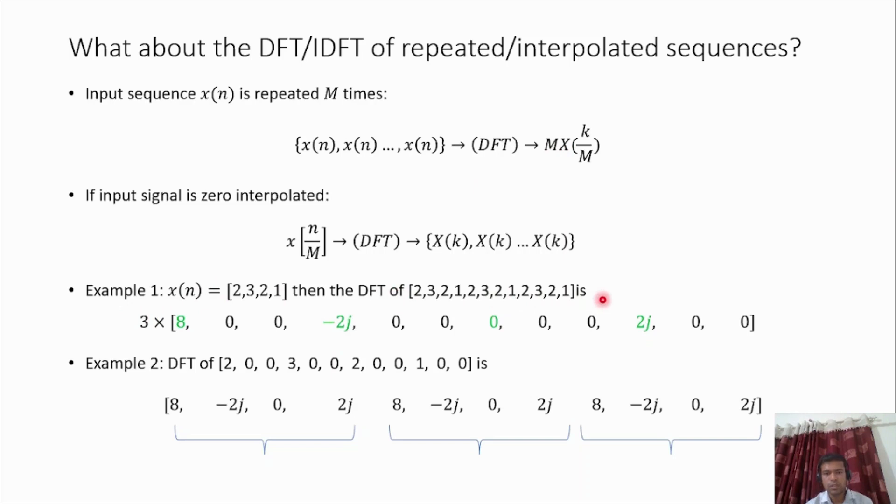Similarly, if we have an input sequence which is zero-interpolated, we have the input sequence [2, 3, 2, 1], but now it is zero-interpolated. We are interpolating two zeros, and the final length of the sequence is 12. We want to calculate the 12-point DFT of this one.